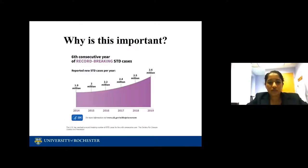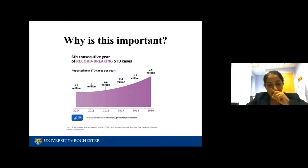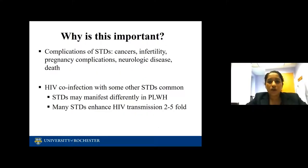So why is this important? This is the sixth consecutive year of record-breaking STDs. We have 2.6 million new STDs in 2019 that were reported by the CDC. This is quite alarming given that this is a completely preventable infection. If other infections were going up at this rate, there would be a lot more publicity and hue and cry. Complications of STDs include cancers, infertility, complications from pregnancy, neurological diseases, and death.